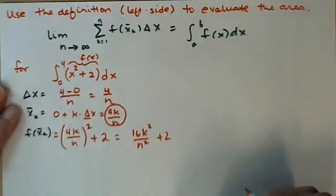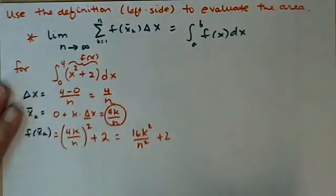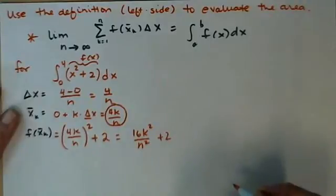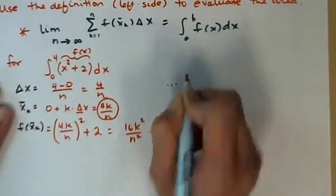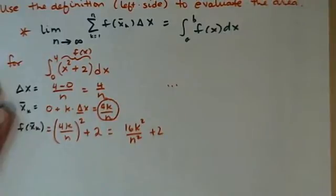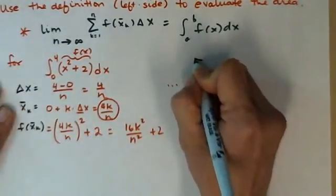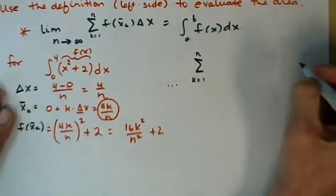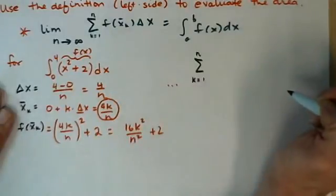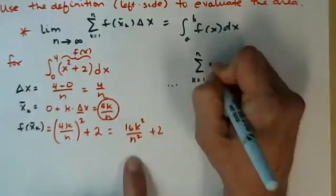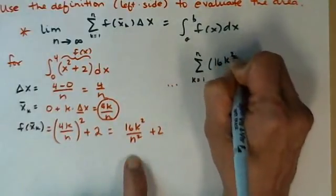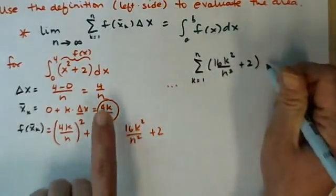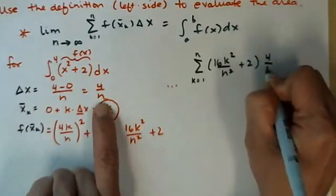I think I'm ready to plug all of those values in to my limit. And I might hold off writing that limit as n goes to infinity until I get a little bit further down the sum. So let's take a little walk down the path of writing out our sum. So summation simple, k, my dummy variable that just counts all the integers from 1 to n, of f of x bar sub k. So that's right here. So 16k squared over n squared plus 2 times delta x, which is now being played by 4 over n.